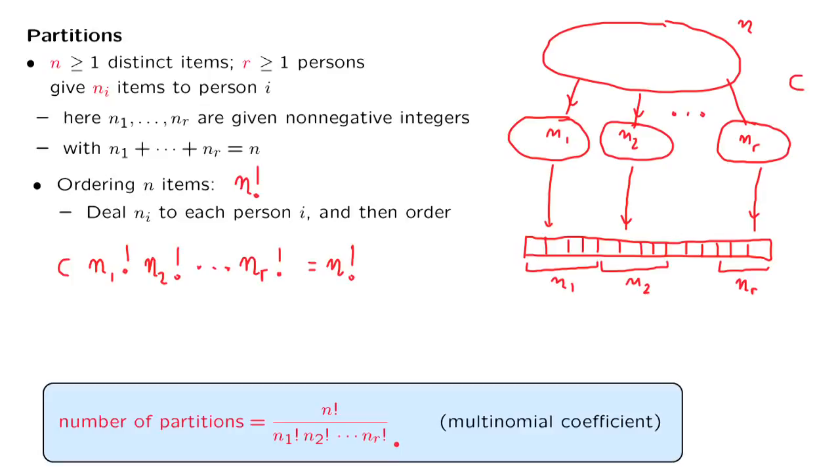This particular expression is called the multinomial coefficient. And it generalizes the binomial coefficient.